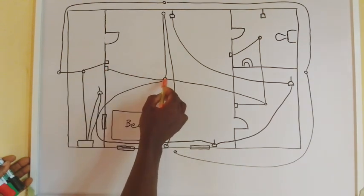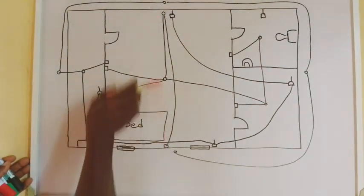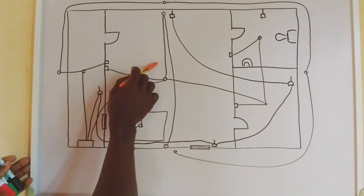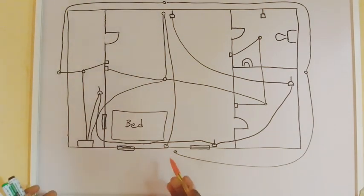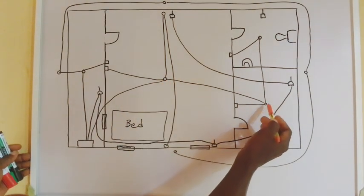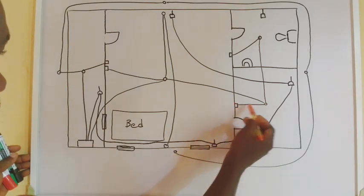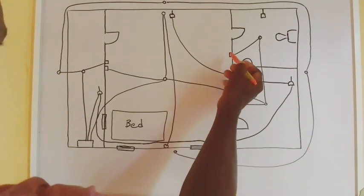Then, from this four-way box, we locate this light. We have two lighting points at this room. From here, we locate this one. There was a fan point here where I just omitted it for better understanding of the sketch. So from here, we locate the kitchen. From this kitchen lighting point, we get back to the switch. And from here, we get to the bathroom.